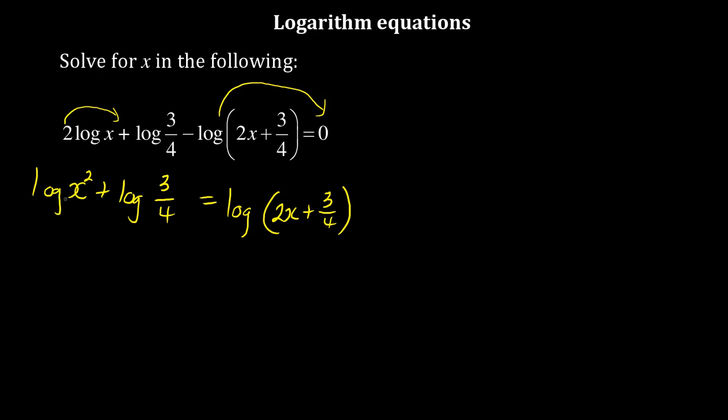Now this is log x squared. You can notice they never indicated any base, which means everything is in base 10. Because I am adding, using the laws of logarithms, the first law states if you are adding you multiply. So you have log of x squared times 3 over 4, which equals log of 2x plus 3 over 4.